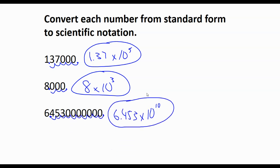So I move it. I count 10 places. So now I have 6.453 times 10, and I moved it 10 places, so it's to the 10th power. And that's how we convert a number from standard form to scientific notation.